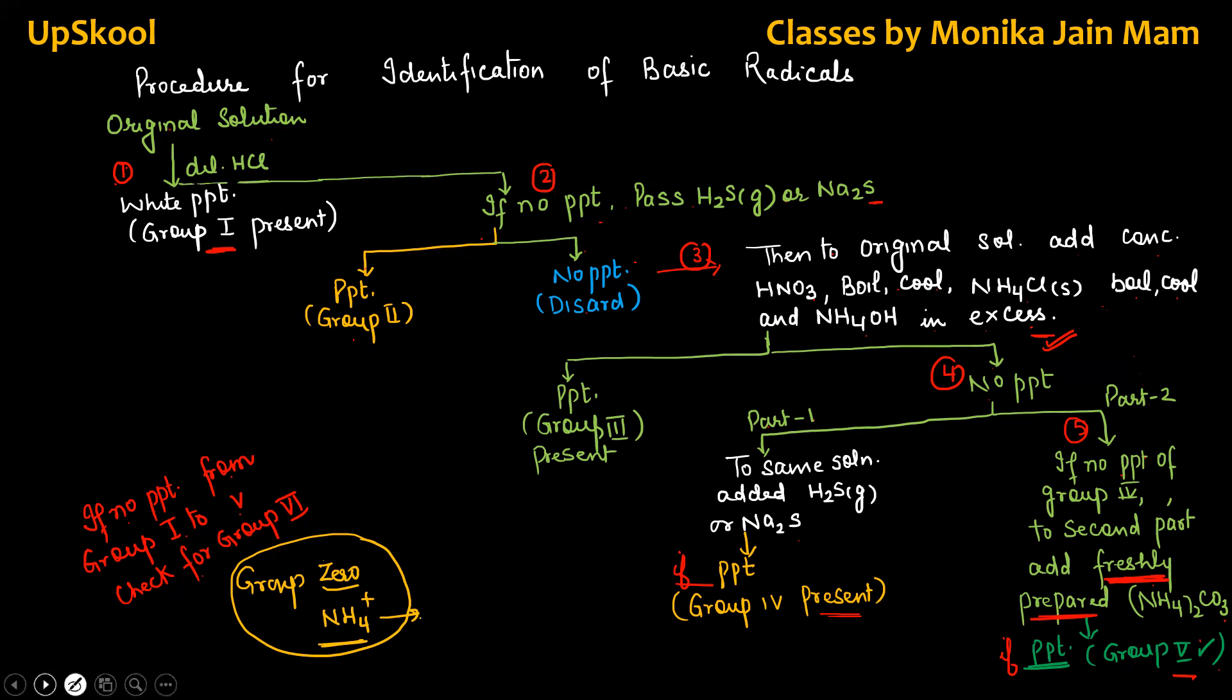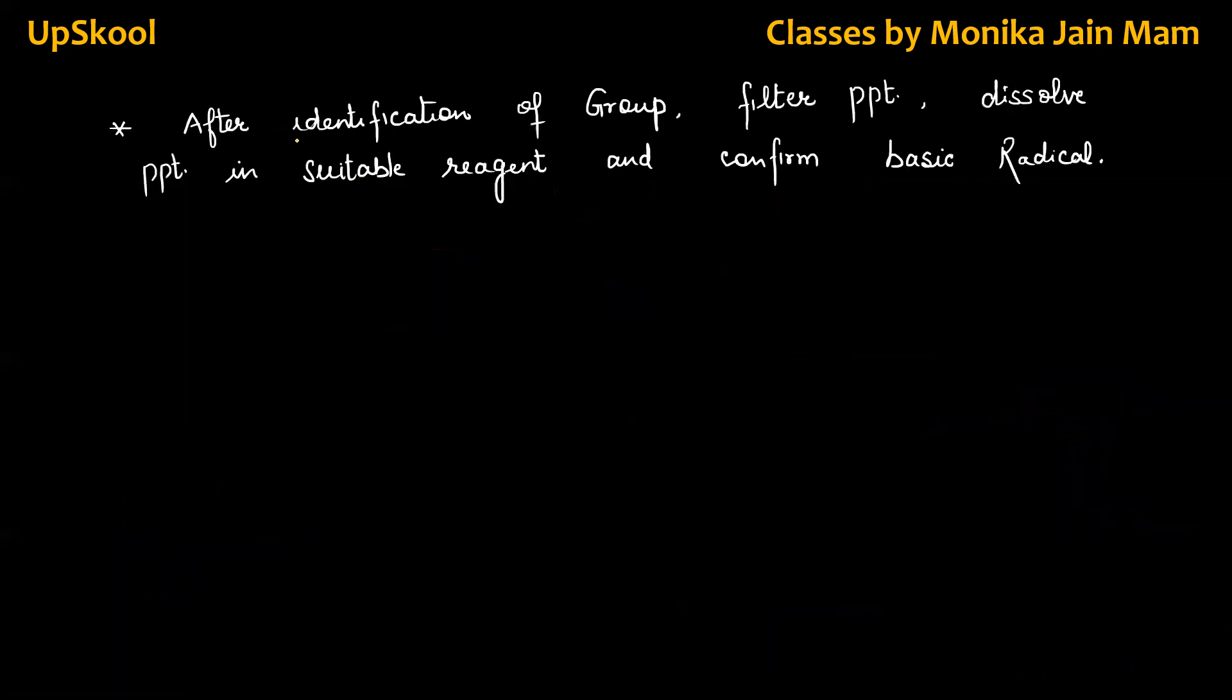After identification of group, whichever group we reach, 1 or 2, if we reach 2 then we don't have to go to 3, 4, 5. Filter the precipitate, dissolve the precipitate in the suitable reagent, and we will confirm basic radical. This way, we can confirm, first identify, then confirm acid and basic radical in the given salt. It is 8 marks question in the board's examination, both for class 11th, as well as class 12th.